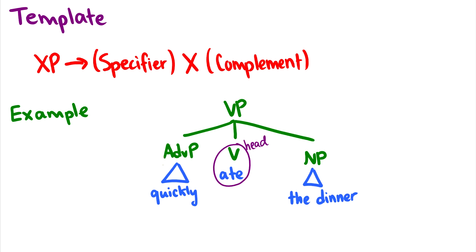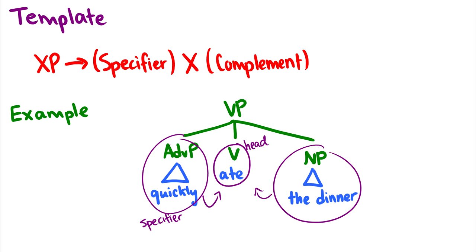We have a specifier like 'quickly', which specifies how the eating was done. For a noun phrase, the specifier would be the determiner. If you have a prepositional phrase with a specifier, it will be a qualifier. Then we have the complement. The complement in English always occurs to the right. In this case, it would be 'ate the dinner', which is the complement of the verb 'ate'. In English and other languages, the object of the sentence will be the complement of the verb. This template applies to PPs, NPs, AdjPs, and adverb phrases as well.